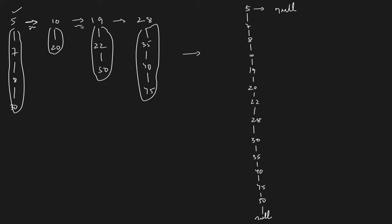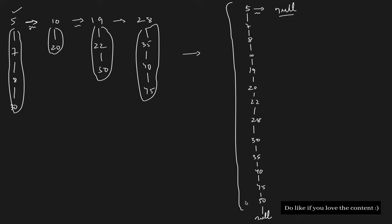To flatten this linked list, you need to convert it into one linked list with bottom pointers, and it should be sorted. You can see values 5, 7, 8, 10, 19 — all sorted values connected via bottom pointers. The next of the first node will always be pointing to null. This is what you need to return as the flattening of a linked list.